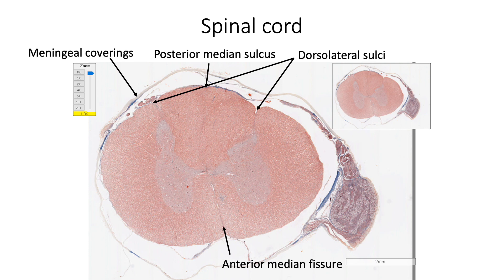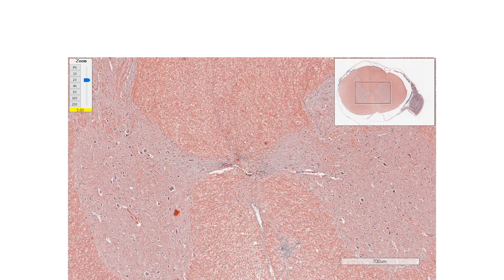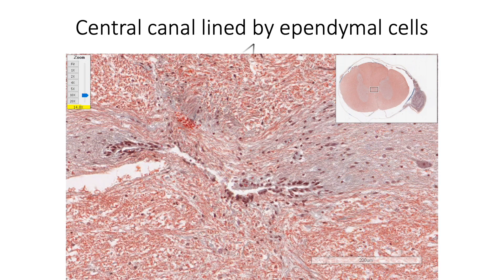Spinal cord has a butterfly-shaped central grey matter surrounded by peripheral white matter. The right and left halves of the grey matter are connected by grey commissure traversed by the central canal. The central canal is lined by ependymal cells, appearing as columnar ciliated epithelium or pseudostratified columnar ciliated epithelium.